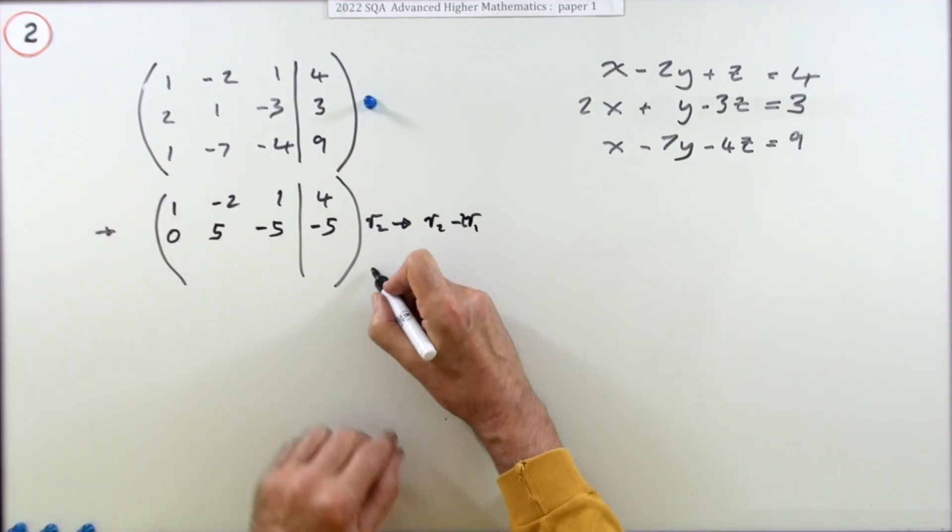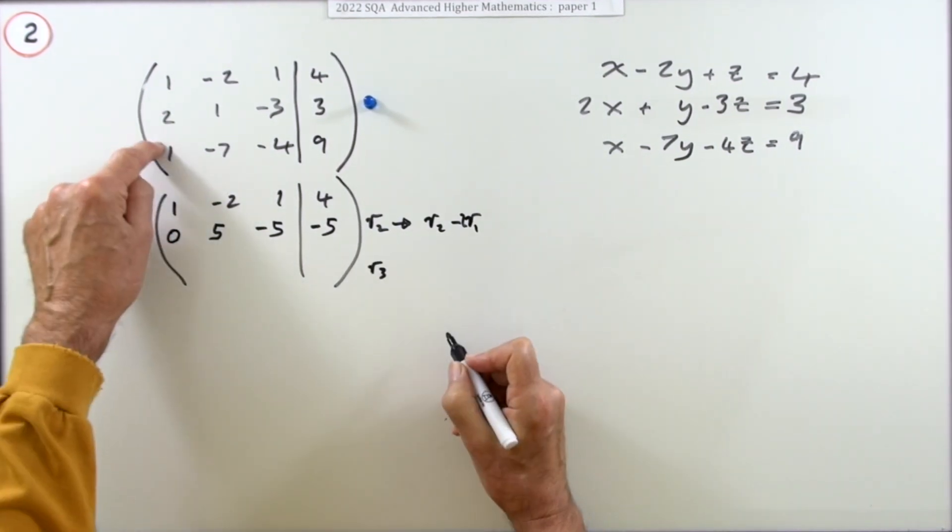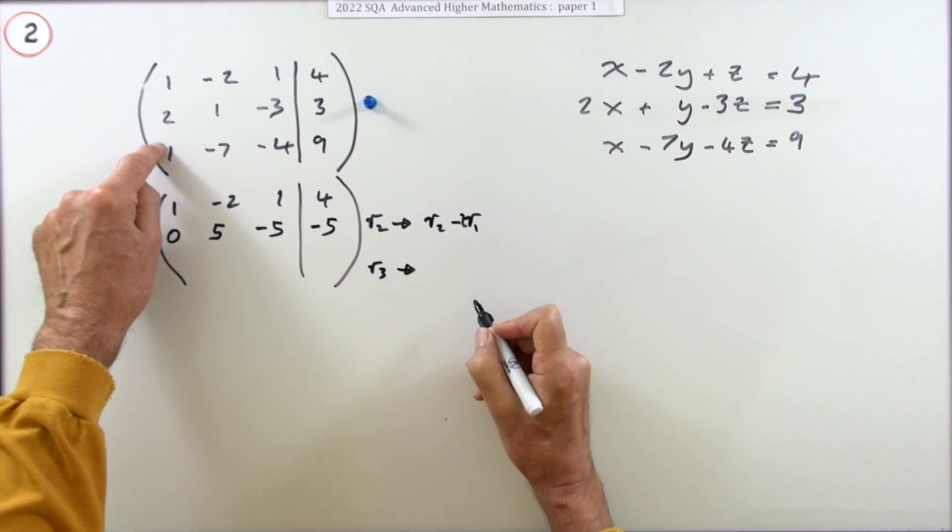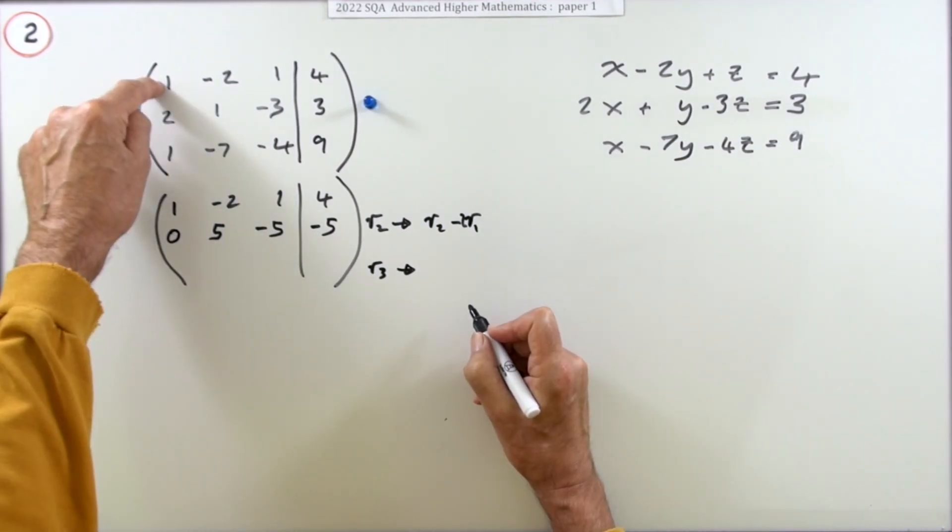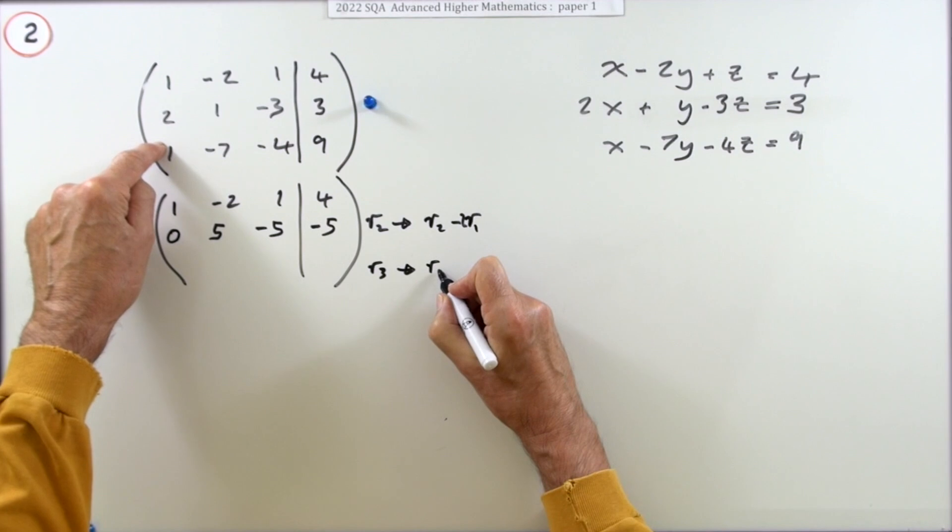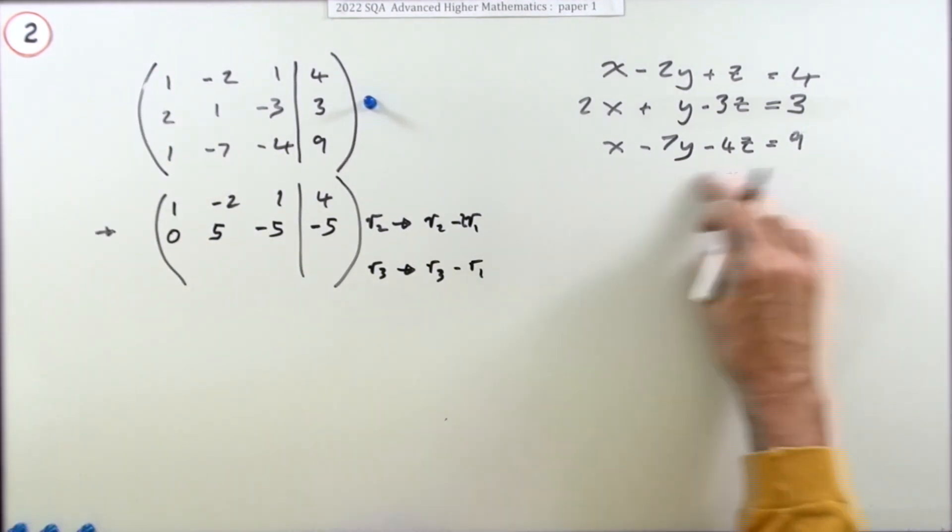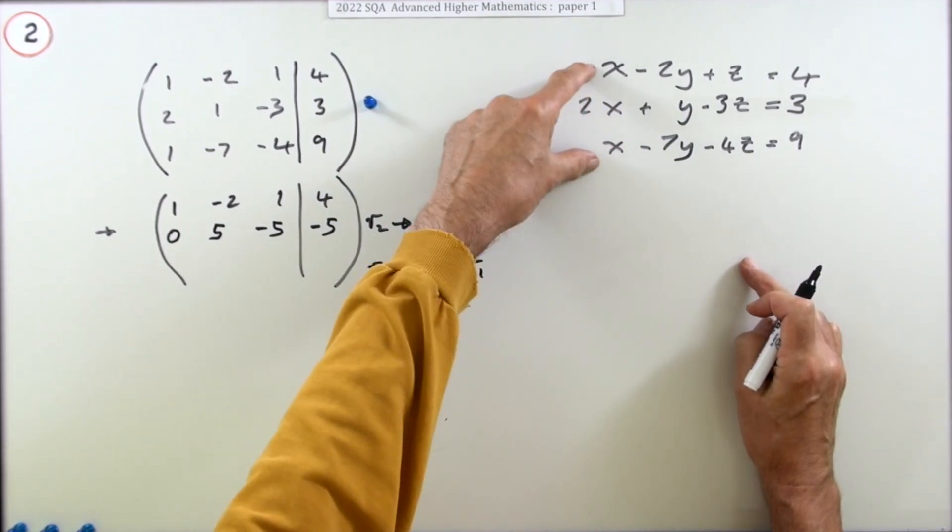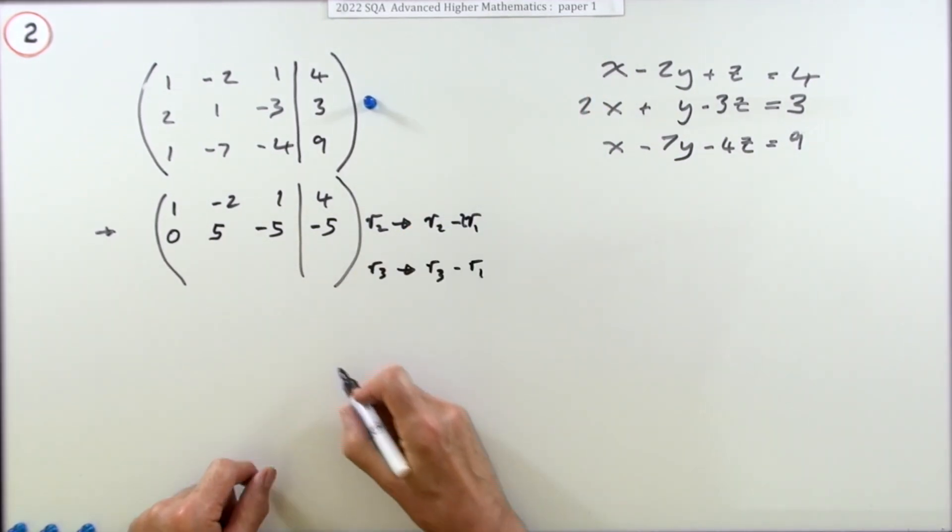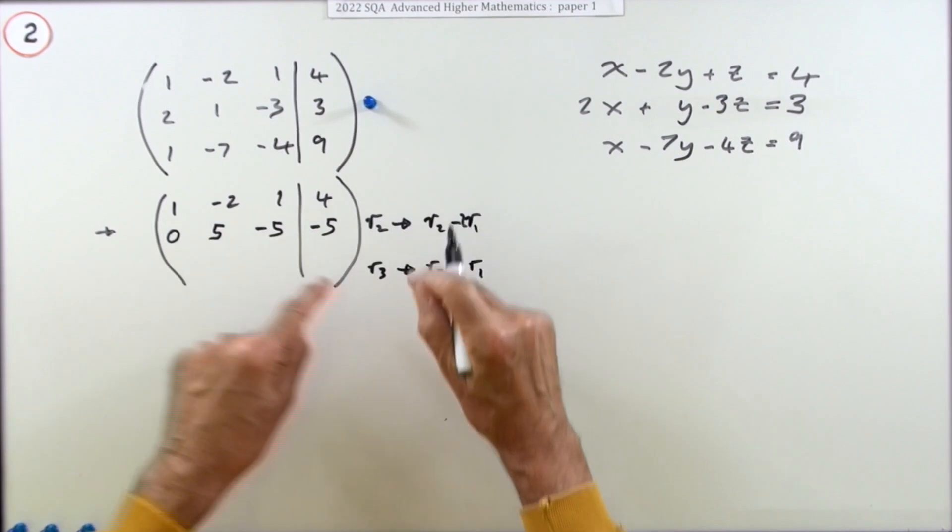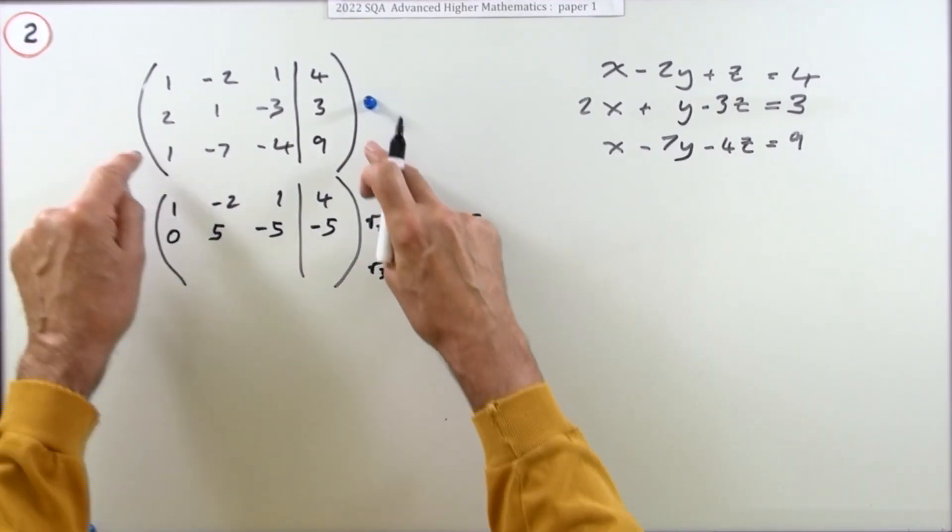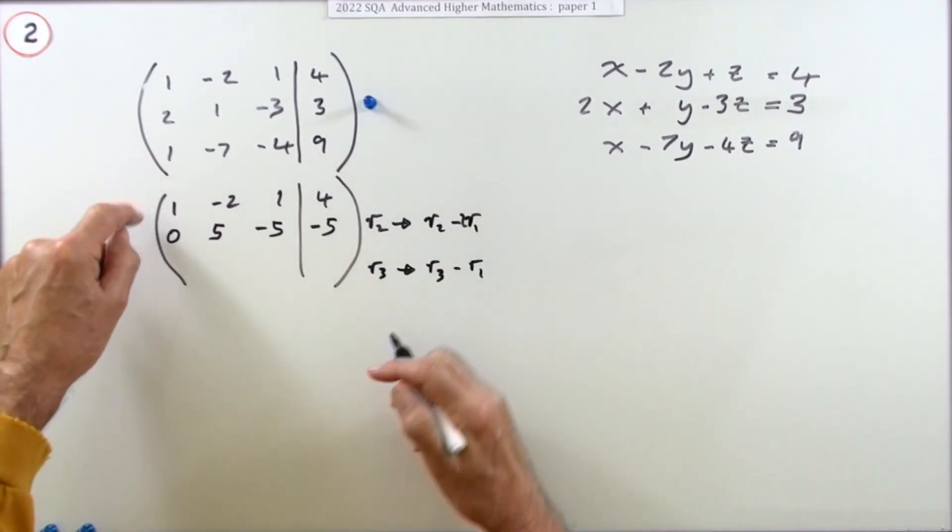Same here, I'm going to replace this row three with row three minus row one, just the same as algebraically. So this doesn't refer to this; this refers to what you had. So 1 take away 1: 0 because that's what you want.